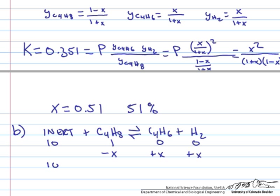So at equilibrium we'll still have 10 moles of inert, 1 minus X moles of C4H8, X moles of C4H6, and X moles of H2. So the total moles in this case is equal to, again, just the sum of everything at equilibrium. So this will be 11 plus X.